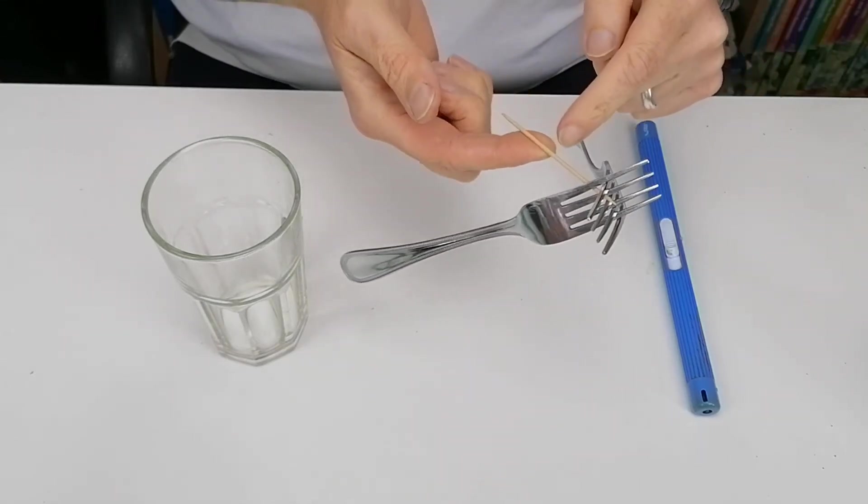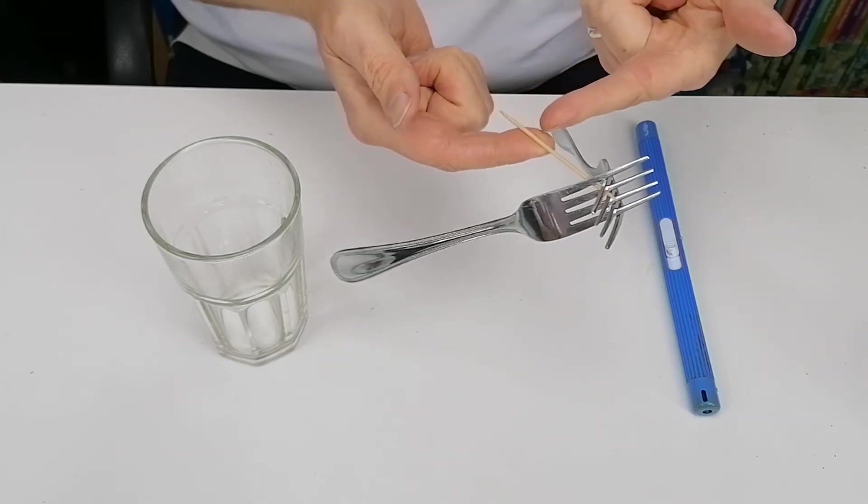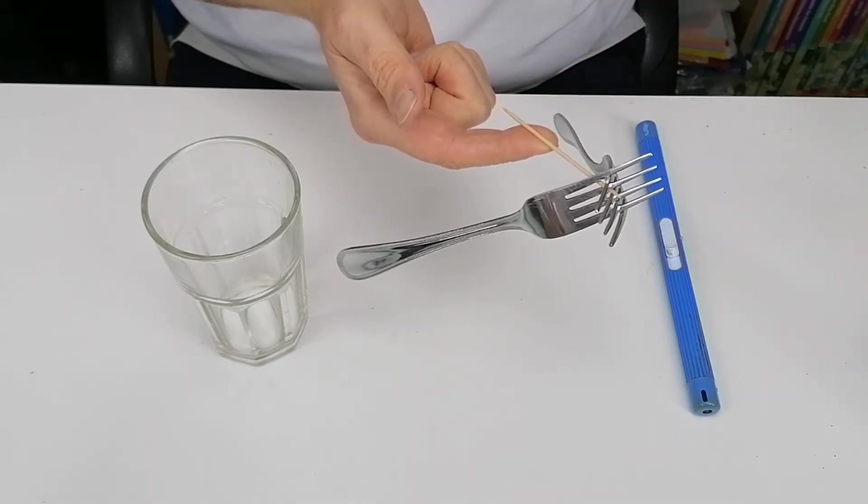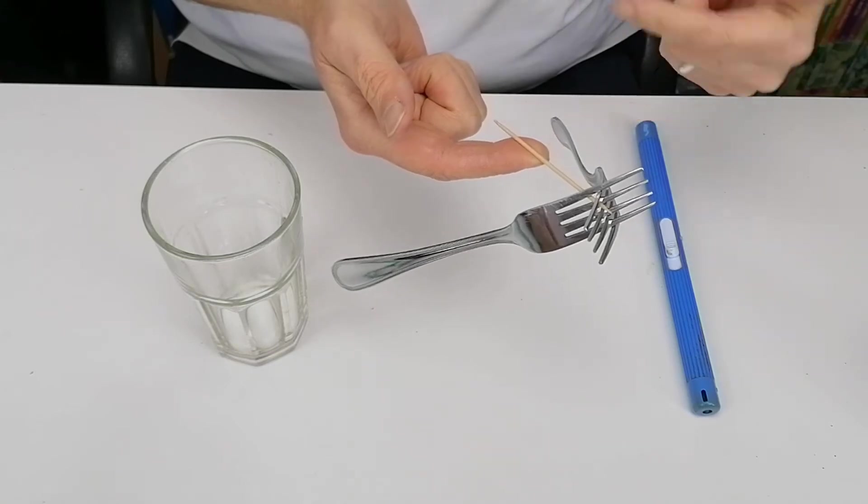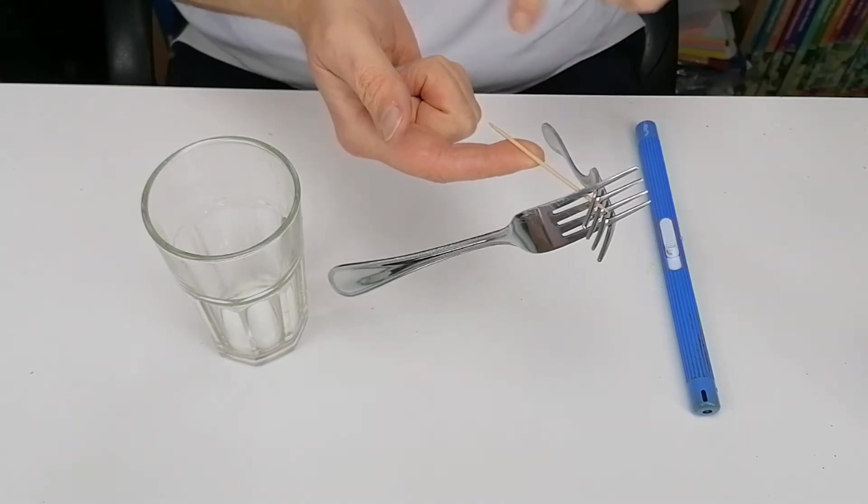So what you're going to do now is you can balance it on a point here on your finger. And that's because the center of mass of the two forks is below your finger here. It's quite low.